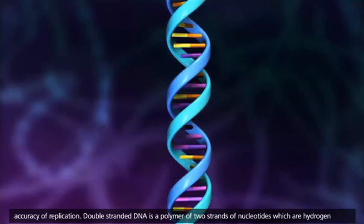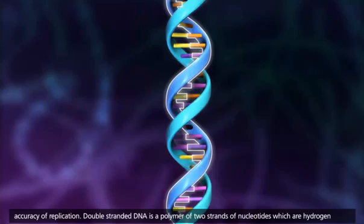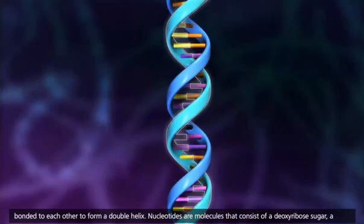Double-stranded DNA is a polymer of two strands of nucleotides which are hydrogen bonded to each other to form a double helix.